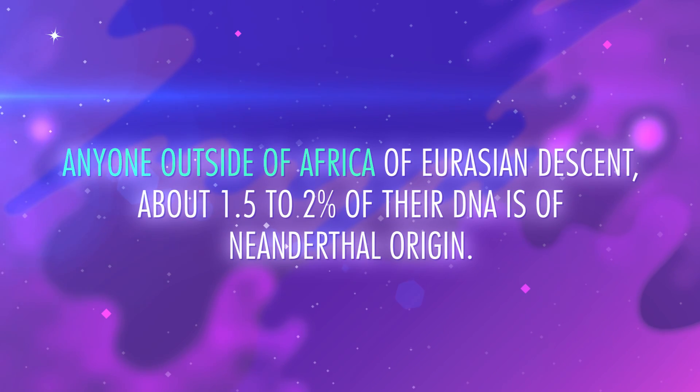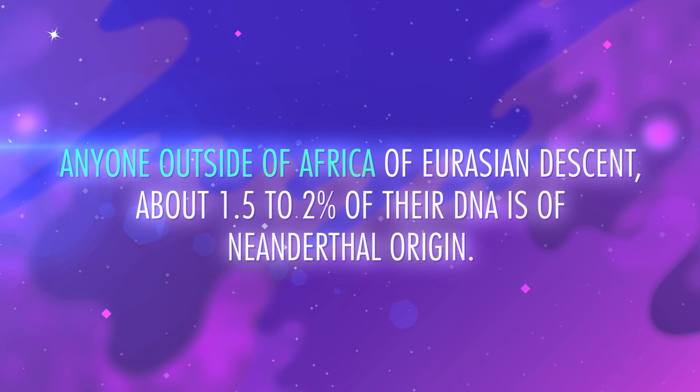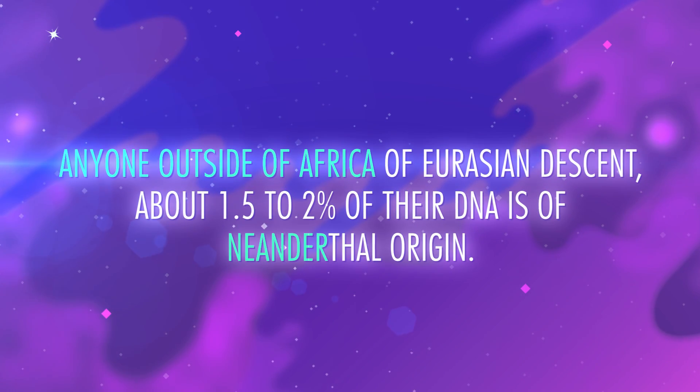Eventually, humans managed to adapt to colder climates, spreading into Central Asia and Europe approximately 40,000 years ago. A few thousand years later, we were even living in Ice Age Siberia. But we weren't the first hominid group to have done this. In fact, there's concrete evidence that humans ran into the now-extinct Neanderthals and even interbred with them. Anyone outside of Africa, of Eurasian descent, about 1.5 to 2% of their DNA is of Neanderthal origin.